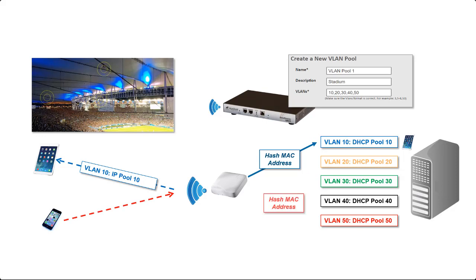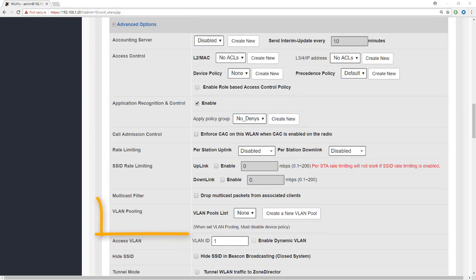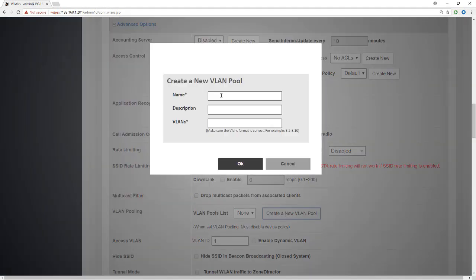The next client connects, its MAC address is hashed and mapped to — say — VLAN 50. The DHCP server allocates an IP address from that pool and sends it back to the client. Every time a client connects, its MAC address is hashed to produce a consistent result, but there is enough diversity among stations to ensure that IP address allocation is balanced across all DHCP scopes. Let's complete this by creating a new VLAN pool: we'll call it VLAN Pool 1 for the stadium, with VLANs 10, 20, 30, 40, and 50.